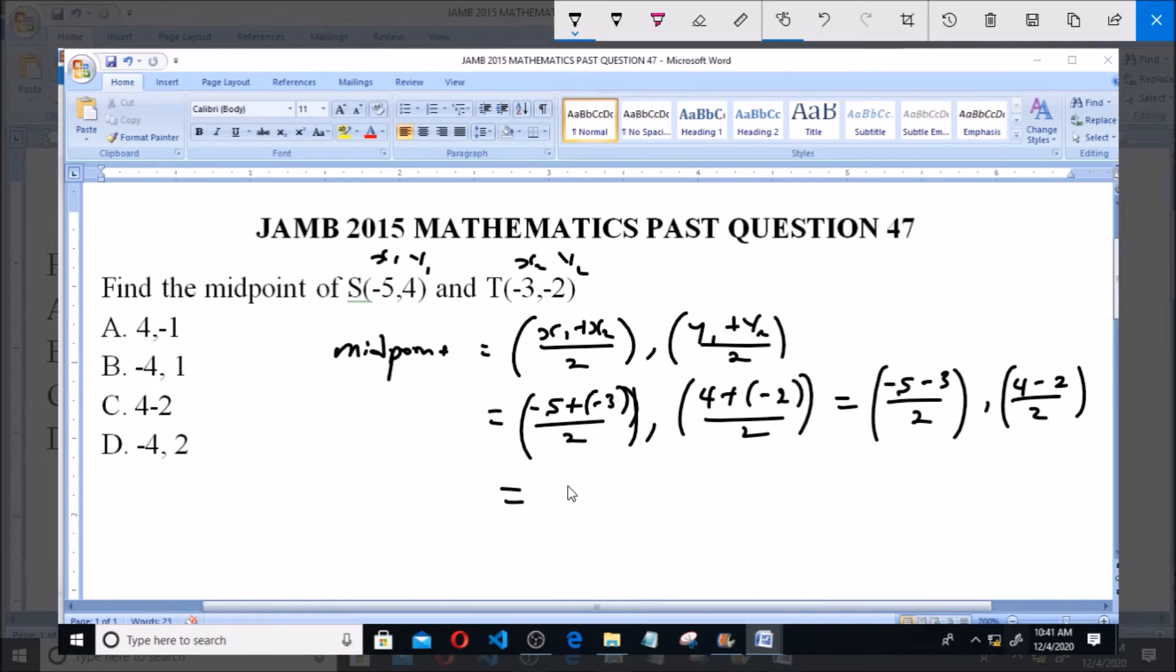So this equals to -4, comma, 1. So the coordinates of the midpoint now is (-4, 1) and that is option B. Thank you.